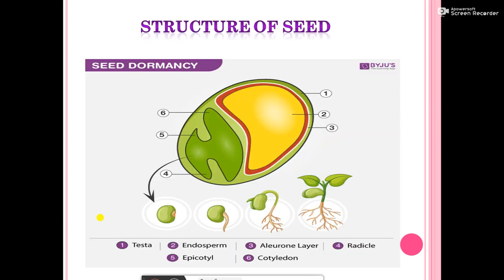The general structure of seeds consists of: first, testa; endosperm; aleurone layer; radicle; epicotyl; and cotyledon.